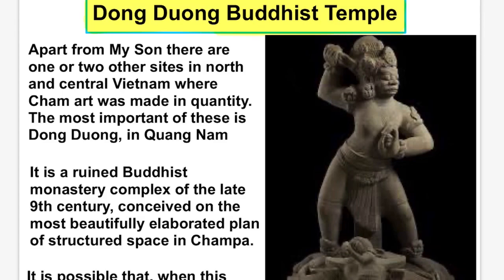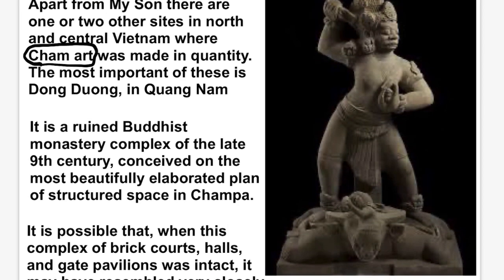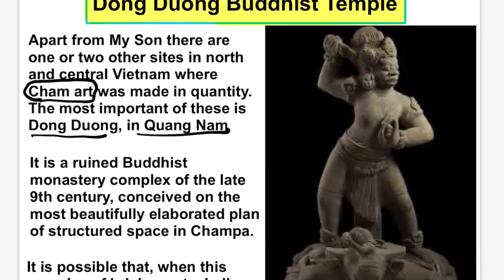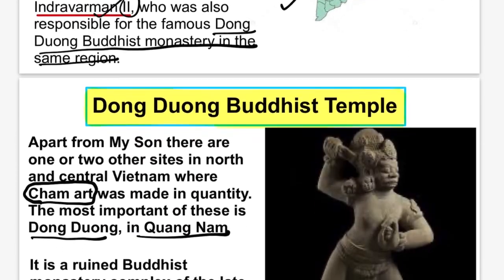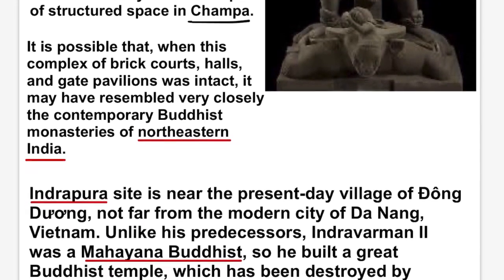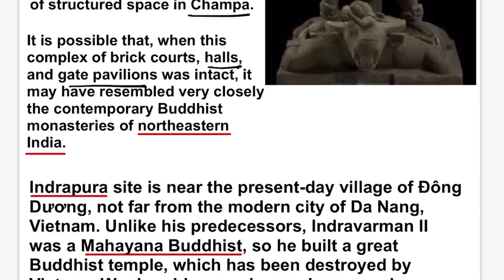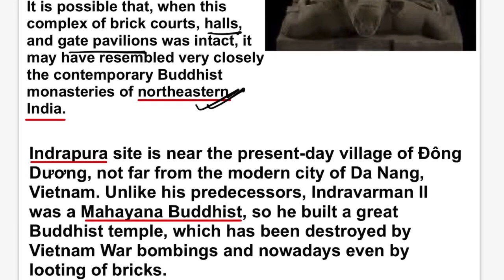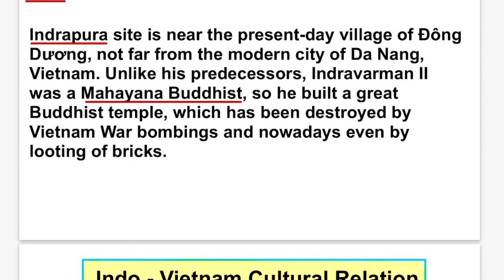Apart from My Son, Dong Duang in Quang Nam province is the most important site for Cham art. It is a ruined Buddhist monastery complex of the late 9th century, conceived on the most beautifully elaborated plan of structured space in Champa. When this complex of brick courts, halls, and gate pavilions was intact, it may have closely resembled contemporary Buddhist monasteries of northeastern India. The present-day village of Dong Duang was the site of ancient Indrapura — also a Hindu-sounding name — not far from Da Nang.